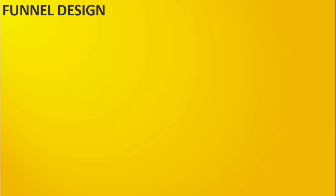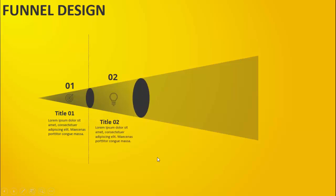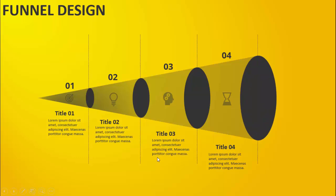In today's tutorial I'm going to show you how to create a four-step funnel design slide in PowerPoint. When I click, you can see I've created a triangle and then one oval shape at the top with an option number, icon, title, and detail text. When I click it will show the second, third, and fourth option. Depending on your requirement you can increase or decrease these options.